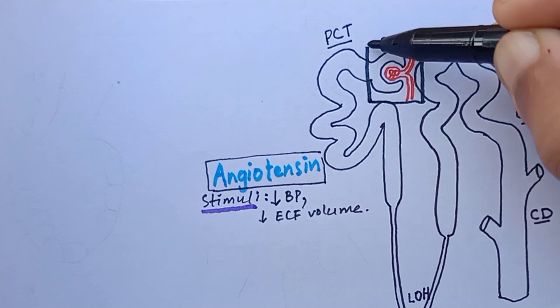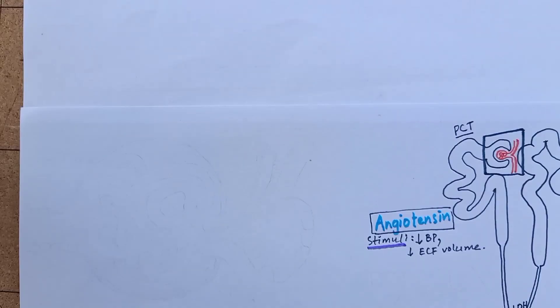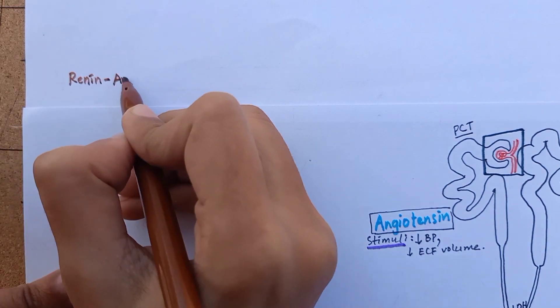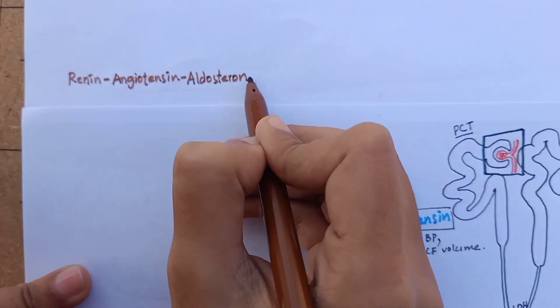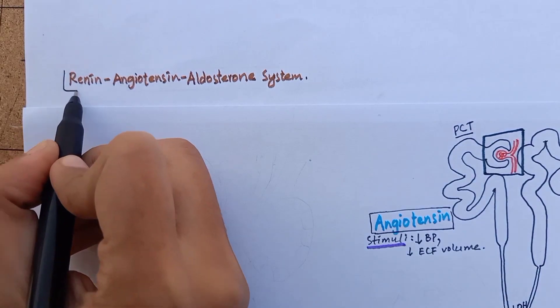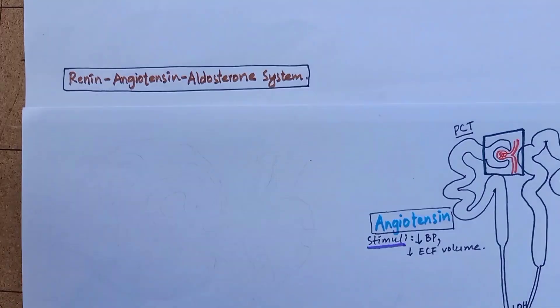Let's magnify this portion of nephron. Angiotensin 2 helps to increase blood pressure and extracellular fluid volume towards normal by renin-angiotensin-aldosterone system.